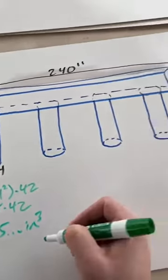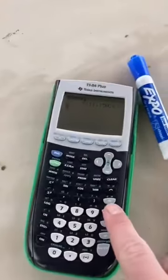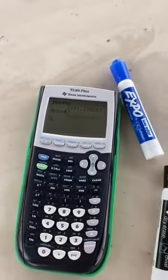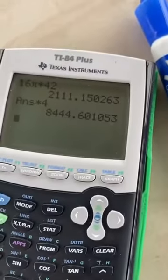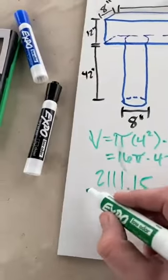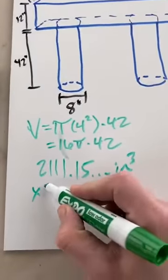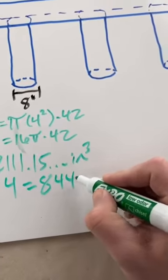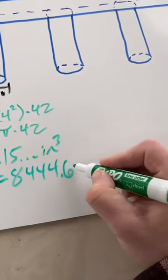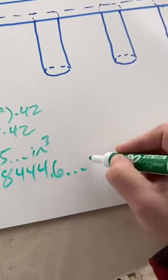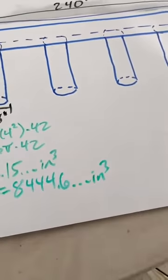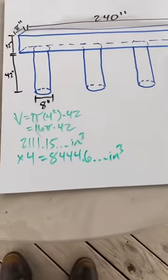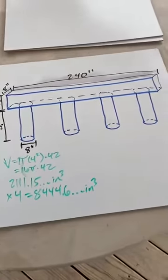Now, how many of those cylindrical footings do we have? I count four. So I'm going to go ahead and multiply that by four and I'm going to get 8,444. So times four gives me 8,444.601 and so on and so forth inches cubed. And those are for all of my footings. So that's one aspect of this.